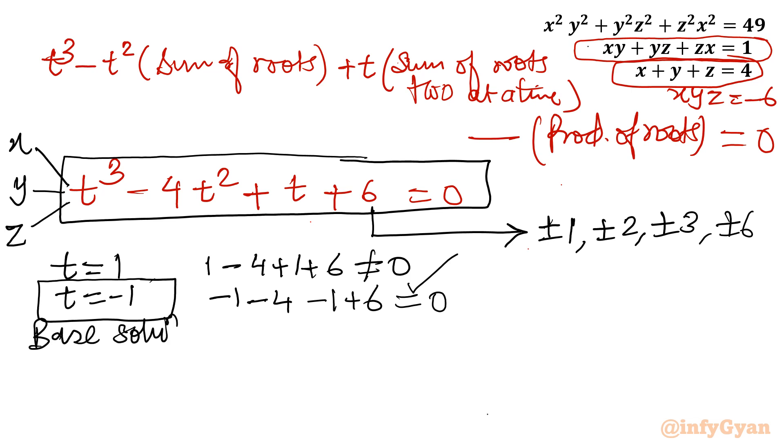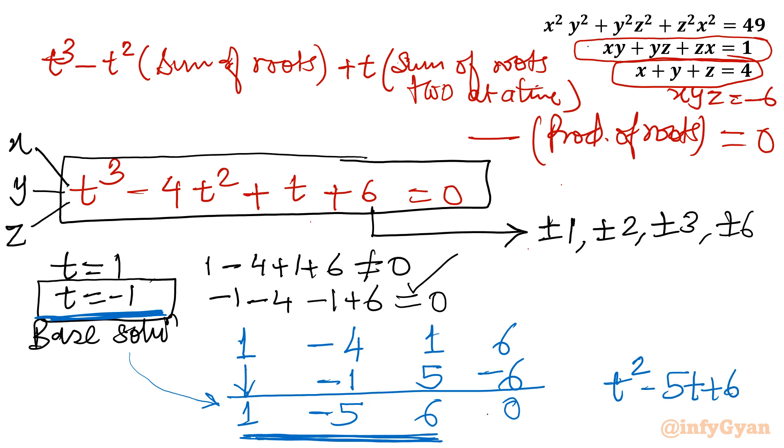Now I will consider the coefficients of this cubic equation for synthetic division method to find out remaining two roots. Coefficient of t cubed is 1, coefficient of t squared is minus 4, coefficient of t is 1, constant coefficient is 6. We can write this one as it is. Now base solution is minus 1. I will multiply this value to this number: minus 1 times 1, minus 1, add both, minus 5. Again minus 1 times minus 5, 5, add both, 6. Minus 1 times 6, minus 6, 0. So these are basically coefficients for our quadratic equation: t squared minus 5t plus 6 equals 0.